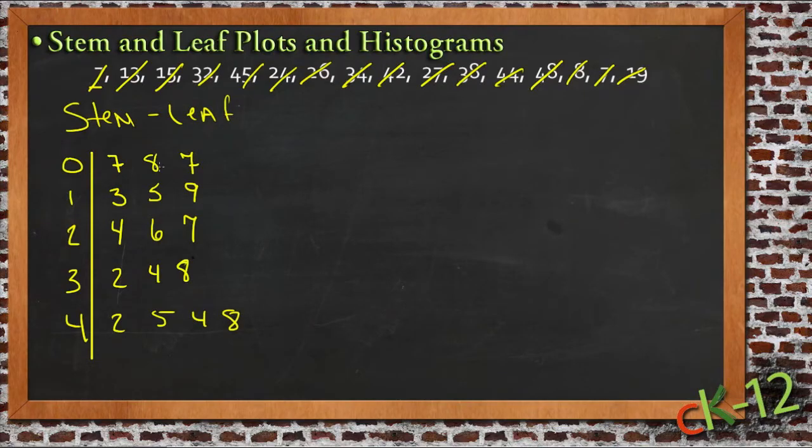So by putting it into the stem and leaf format, we can see right away that there's more numbers in the 40s than there are in any other area. And that certainly wasn't immediately apparent just by glancing at the numbers. We can also see that most of the numbers in the ones column are higher numbers. They're all 7, 8, 9, or 7 and 8 here. They're all right near the top.